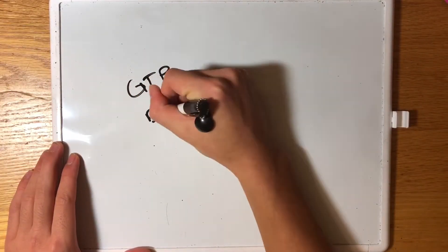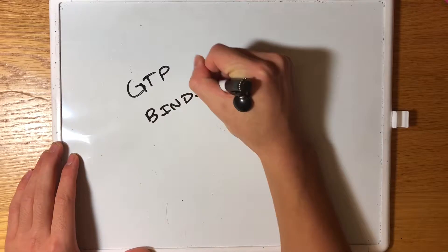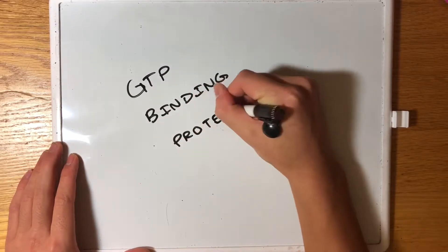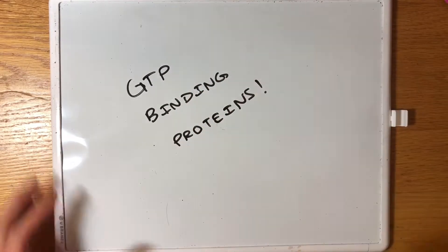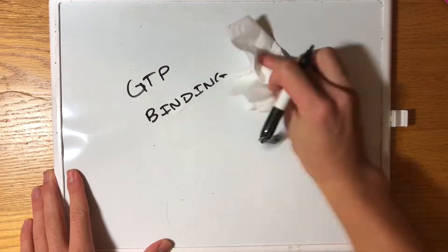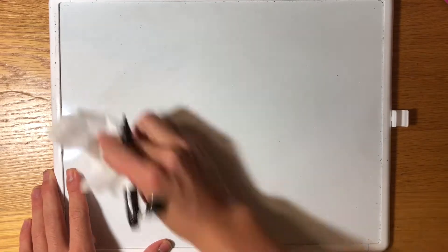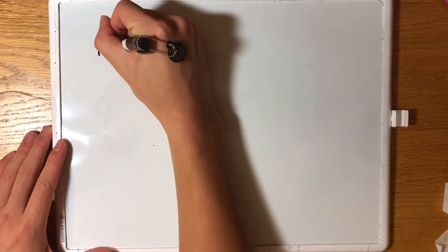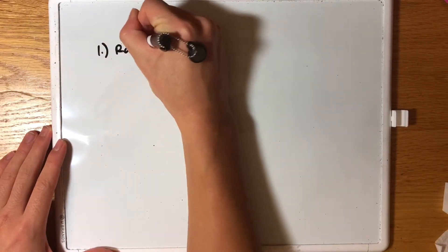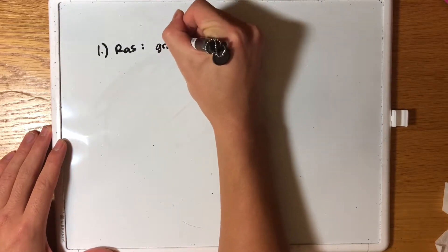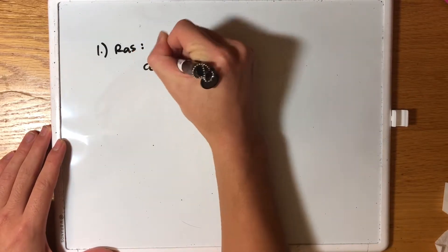Hey guys, today we're going to talk about GTP-binding proteins. These are really important for regulating different functions inside of the cell. We're going to have five categories.